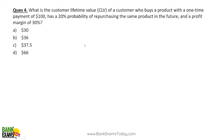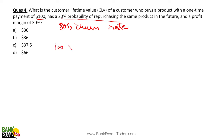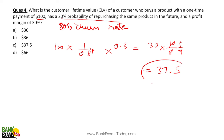What is the customer lifetime value of a customer who buys a product with a one-time payment of $100, a 20% probability of purchasing the same product in the future, and a profit margin of 30%? The 20% probability of future purchase is the retention rate, so churn rate is 80% (0.8). CLV = $100 × (1 ÷ 0.8) × 0.3 = 100 × 0.3 × (10/8) = 30 × 1.25 = $37.5. That's your answer — very easy calculations, and calculators are not allowed.